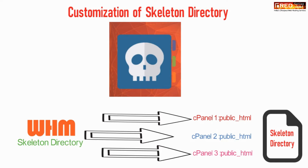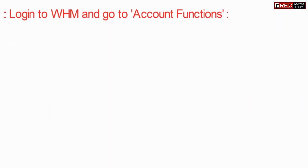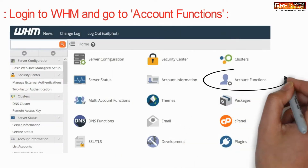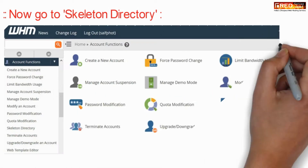By default, the cgi-bin view is visible. You can customize this by going to Account Functions and then go to Skeleton Directory.